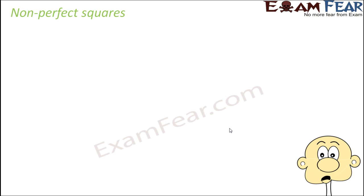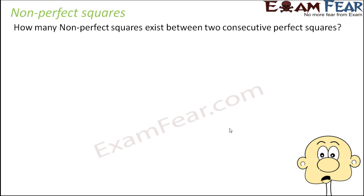Non-perfect squares are those numbers which are not perfect squares. If you observe the perfect squares from the beginning, starting with 1, you would see that there are many numbers in between those perfect squares which are non-perfect squares. So non-perfect squares lie in between perfect squares. The question is: how many non-perfect squares exist between two consecutive perfect squares?